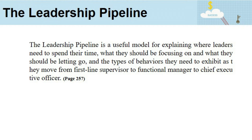Because people at different organizational levels need to exhibit different behaviors, many companies have created competency models to describe the behaviors needed to be successful at different organizational levels. According to the leadership pipeline model, the most effective leaders are those who can accurately diagnose the organizational level of their job and then exhibit behaviors commensurate with that level. The pipeline also provides a potential explanation for why some people fail to advance — these individuals may not be focusing on the right things or may be exhibiting leadership behaviors associated with lower organizational levels.